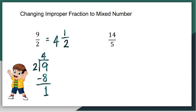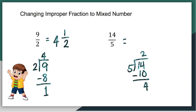Let's do it one more time. Fourteen over five — change to a mixed number. How many fives are there in fourteen? It's just like dividing fourteen by five. We have two fives, which gives us ten, and the remainder is four. So we have a whole number two and a left over of four over five. So fourteen over five is the same as two and four fifths.